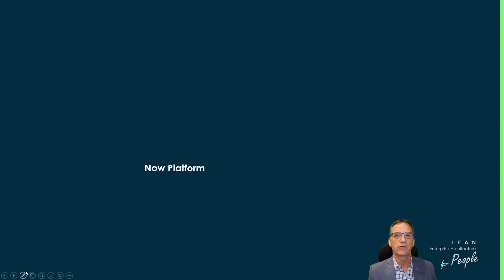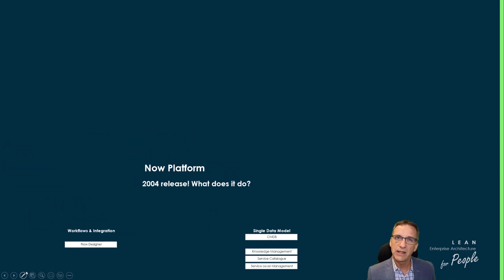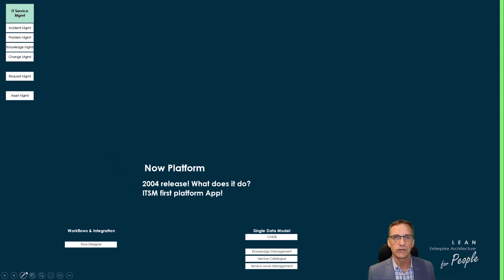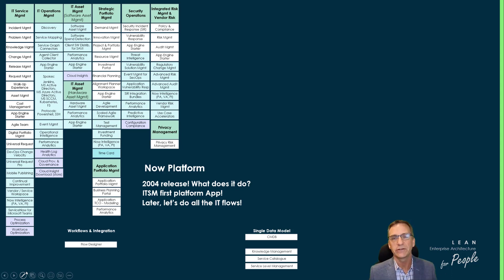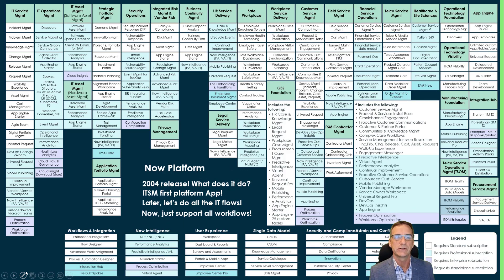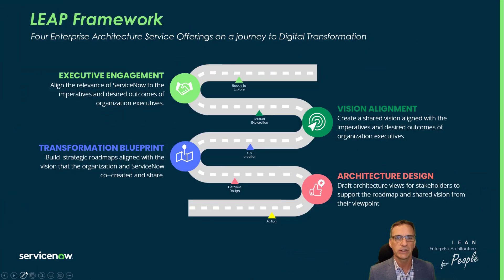We built Leap because of the Now Platform. If you go back to 2004, it was a very simple platform that only did a few things. Then we released IT Service Management — our first product — and soon after came other IT products, expanding even into the security area because it closely paralleled IT. Fast forward to today and there are a lot of capabilities, which is where you start to think about business architecture, data architecture, and technology architecture. Our team uses the Leap framework, which has four offerings, to communicate complex things simply to our customers.